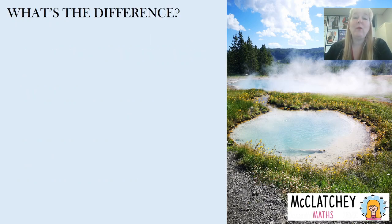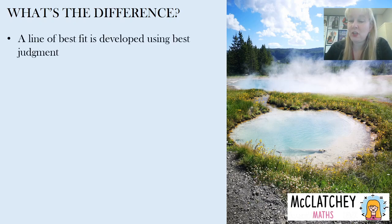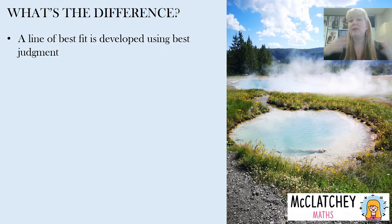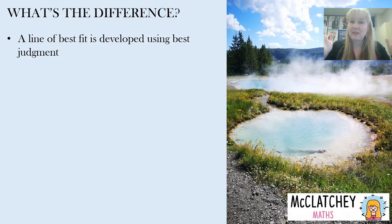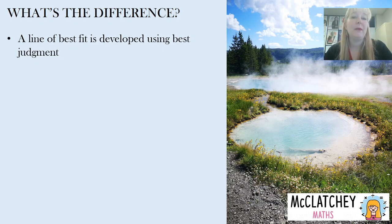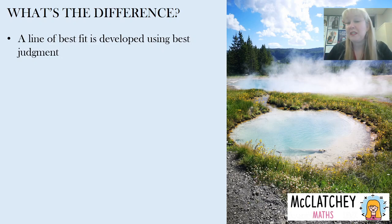Let's get started by talking about what is the difference between a line of best fit and a least squared regression line, also known as an LSR line. The line of best fit, which we fitted on a scatter plot in our earliest videos, was drawn using our best judgment — trying to get as many points on the line as possible and roughly the same number of points above and below the line. Obviously when we're using our best judgment we can make mistakes, though we can also use that judgment to eliminate outliers, so there are advantages and disadvantages to this method.